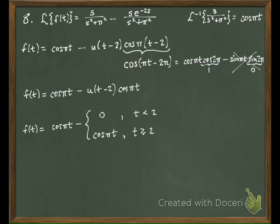So, this is going to have a value of cosine pi t minus 0 if t is less than 2. And it's going to have a value of cosine pi t minus cosine pi t if t is greater than or equal to 2.